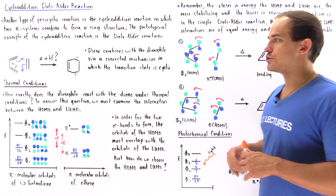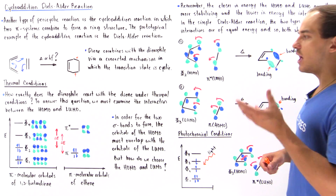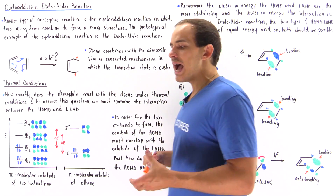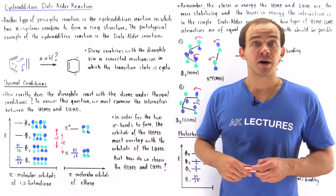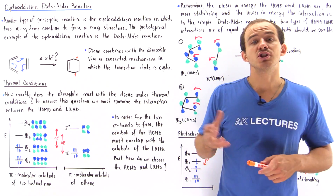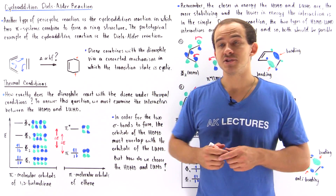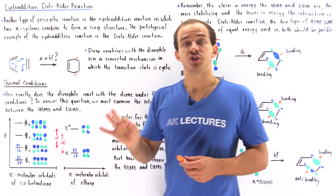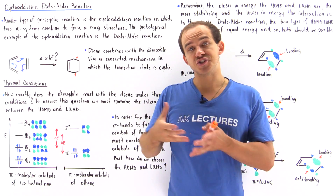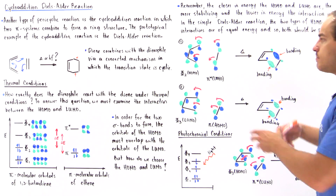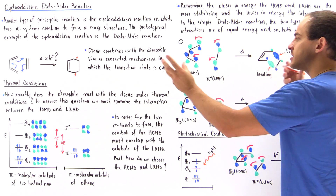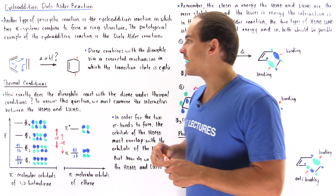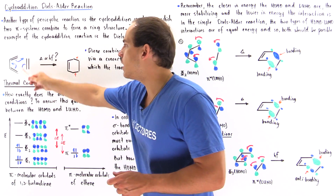Let's begin with the thermal conditions. How exactly does our dienophile react with the diene under thermal conditions? To answer this, we have to determine what the HOMO — the highest occupied molecular orbital — is and what the LUMO — the lowest unoccupied molecular orbital — is. One of these pi systems has the HOMO, the other one has the LUMO. Once we determine that, we can interact them to form our final product. So let's determine the pi molecular orbitals of 1,3-butadiene and of ethene.